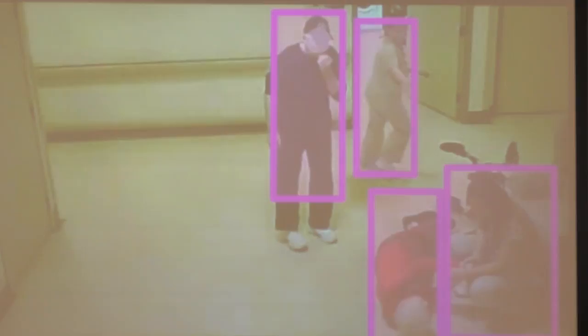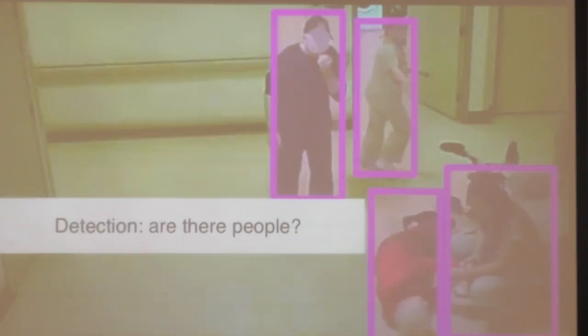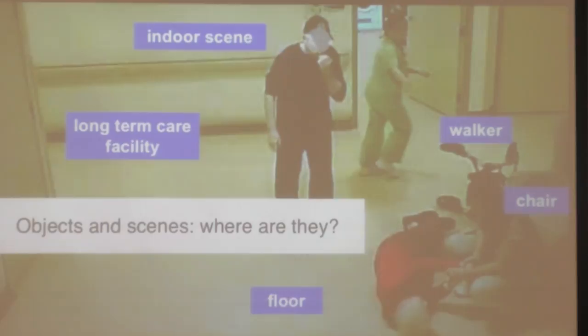To set the stage, we'd like to be able to take in scenes — either an image or a video — and try to understand what's happening. In terms of the ingredients that go into solving this activity recognition task, there are a number of things we need to do. One of them is knowing whether there are people and where they are. The state of the art in algorithms like this has progressed to the point where we can achieve almost 98% precision-recall equal error rates for detecting all people in the scene. But we want to go beyond that. Knowing context — for example, that people are in a nursing home with a walker and a chair — helps us understand what's going on.